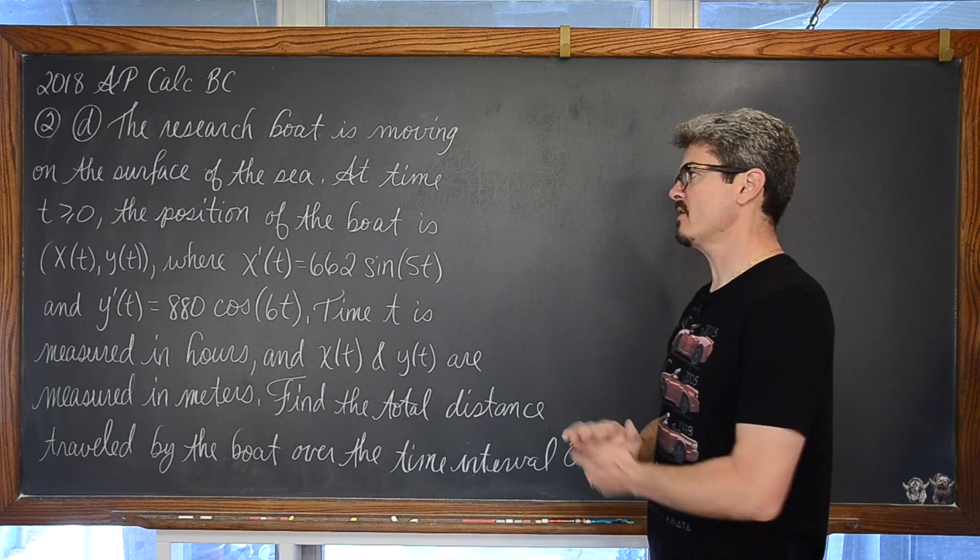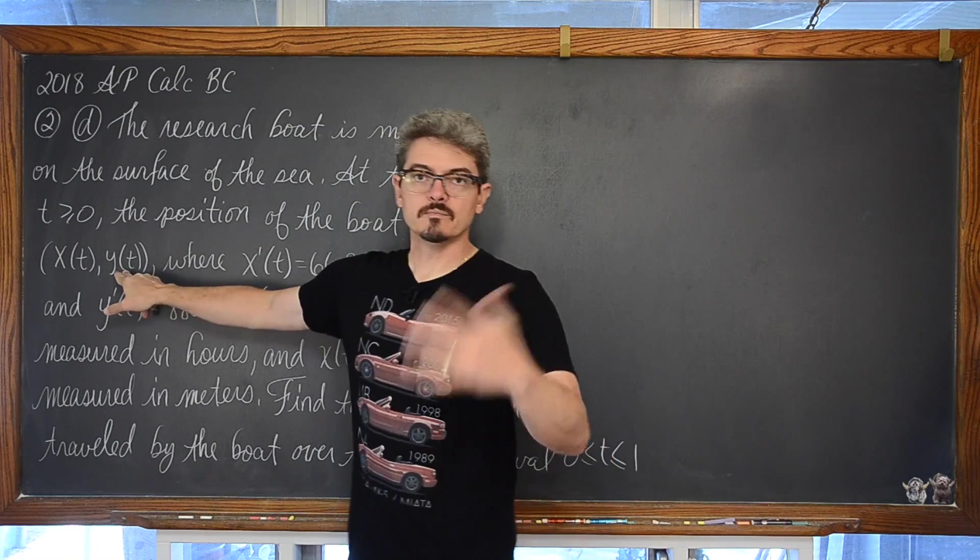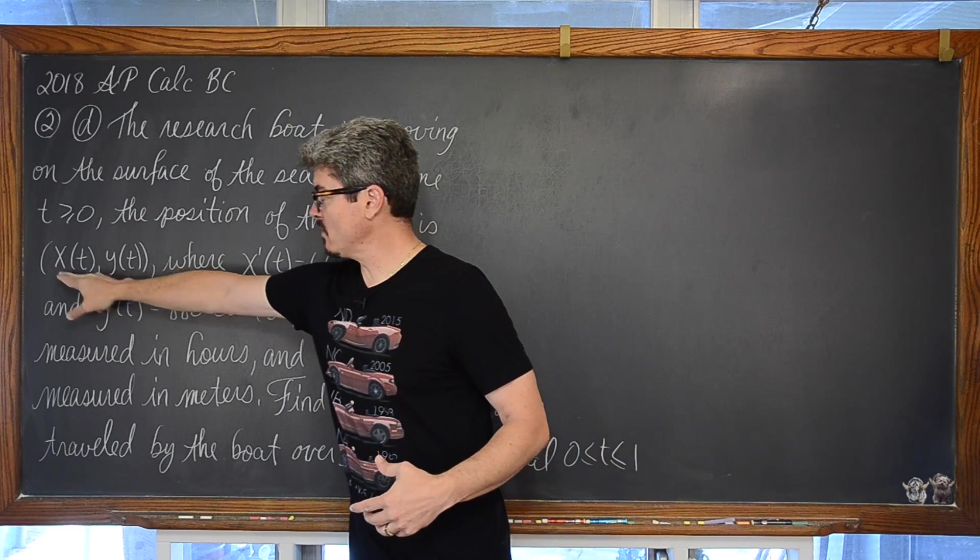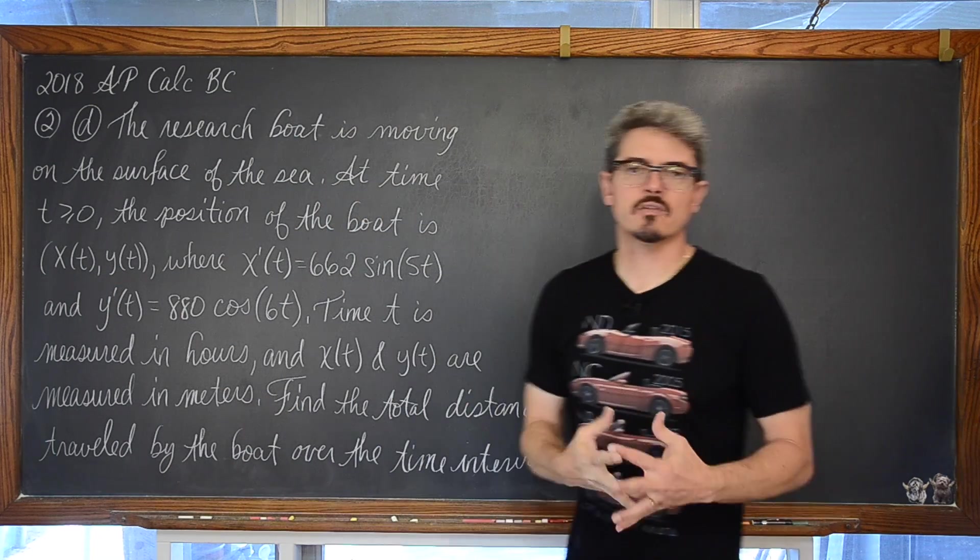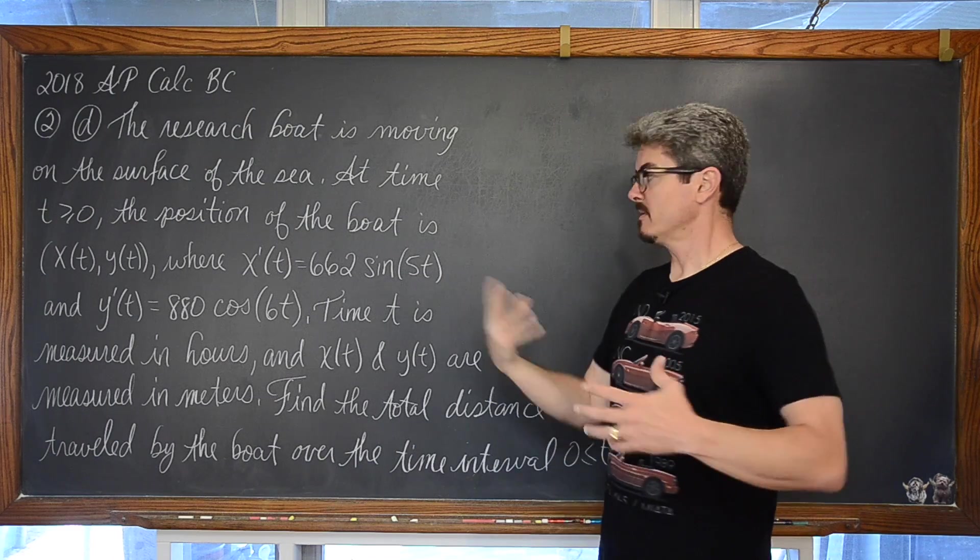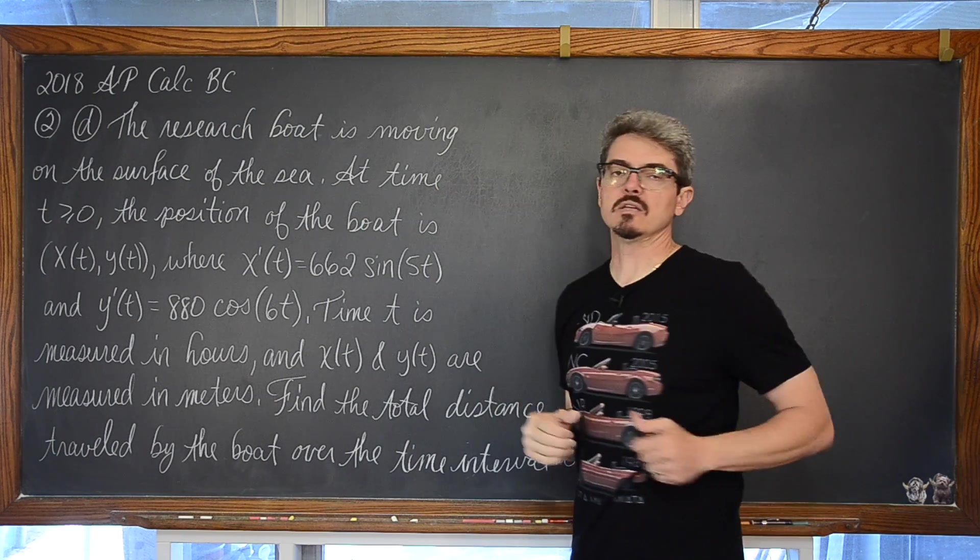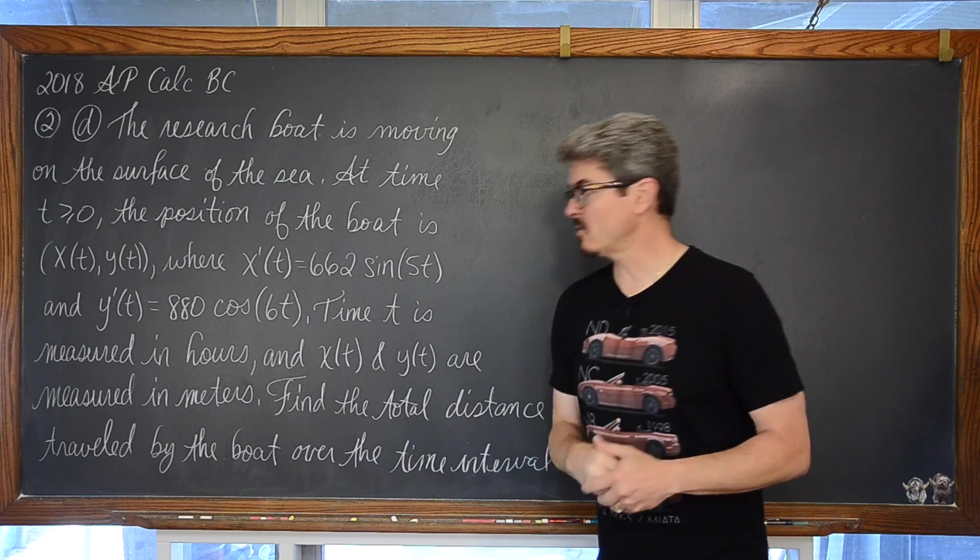At time t is greater than or equal to zero, the position of the boat is, well, some point, but you see here where it's x of t and y of t. The position of the boat is given as basically a pair, the motion of the boat is being described by, and thus the position is being described by, a pair of parametric equations.